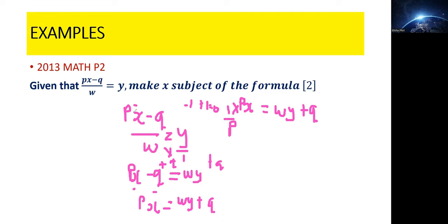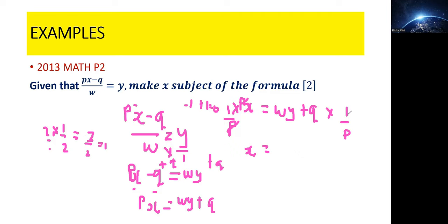For example, the multiplicative inverse of 2 is one over 2, since 2 times one-half equals one. Similarly, the multiplicative inverse of p is one over p. So we multiply both sides by one over p. The p's cancel on the left, leaving x, which equals wy plus q over p. So we have successfully made x the subject of the formula.